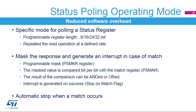A specific mode has been implemented in the OctoSPI interface to autonomously poll status registers in the external flash. The OctoSPI interface can be configured to periodically read a register in the external flash. The returned data can be masked to select the bits to be evaluated. The selected bits are compared with their required values stored in the match register. In ANDED mode, if all the selected bits are matching, an interrupt is generated. In OR mode, if one of the selected bits is matching, an interrupt is generated. When a match occurs, the OctoSPI interface can stop automatically.